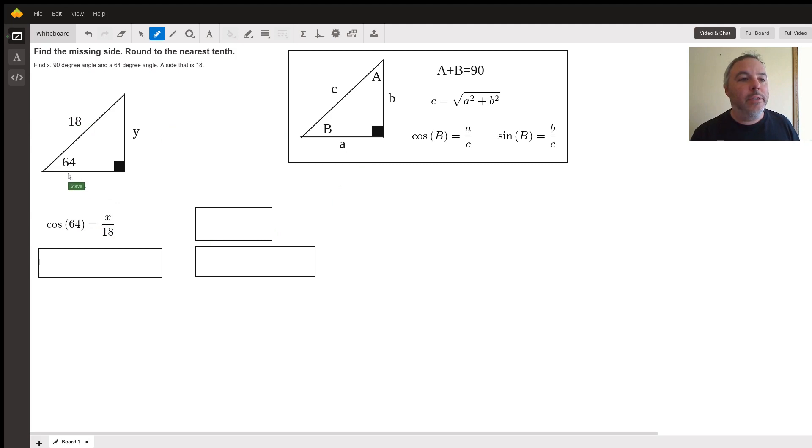So first thing we're going to do is say the cosine of this angle here, 64 is X over 18 using this formula here. So B is 64 and then A is X and C is 18. So if I want to solve for X, what do I need to do? Multiply the right and the left by 18. And what we're left with is X equals 18 times the cosine of 64, which comes out to be 7.89. Hold off on that. That's not the answer. And we'll show you why in just a second.